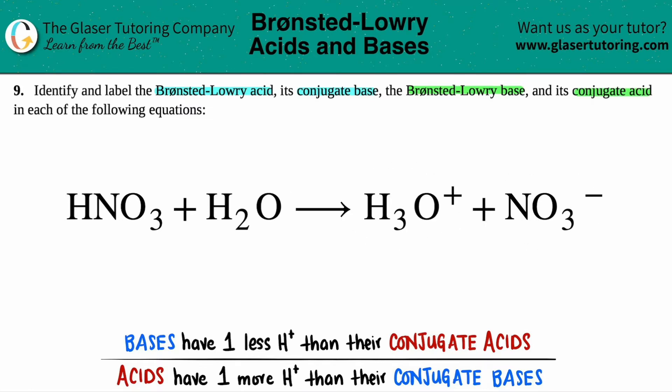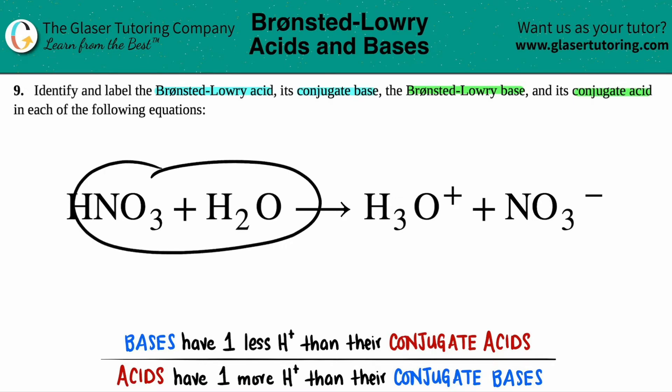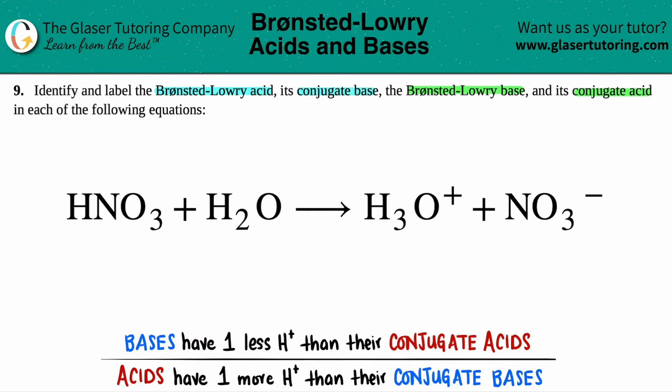The easiest way to do these is to first find out the pairs. We can't do anything without finding the pairs. The pairs are very simple to spot because they are going to be basically the same except for either an H or an OH — 99% of the time it's going to be a hydrogen difference. We're always going to have one part of the pair on the left side and one part on the right side.